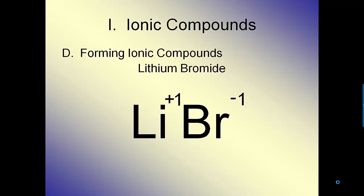This is a method I call crisscrossing the charges, and what we want to do is balance the positives with the negatives. We're going to take the one from the bromine and bring it down as a subscript on the lithium. And I'm going to do the same thing with the lithium. Take the one on the lithium and bring it down as a subscript on the bromine.